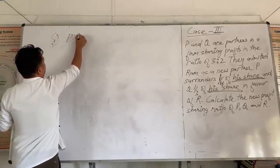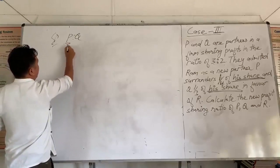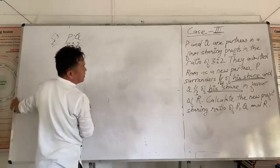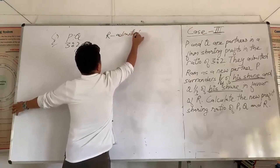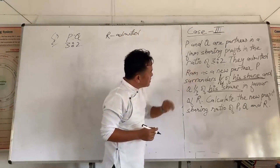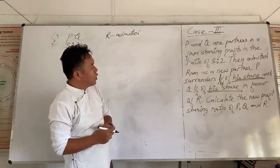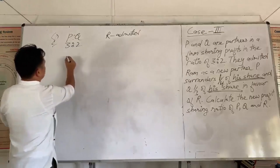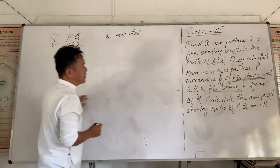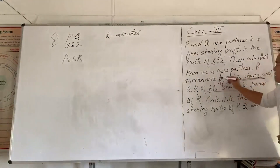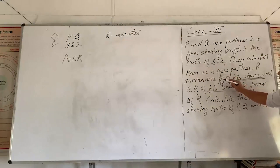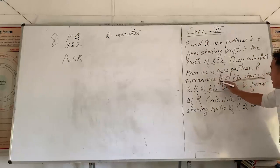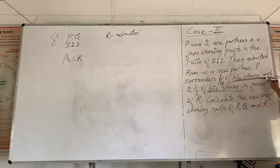So P and Q are partners sharing profit in the ratio of 3 to 2 and they admit R. The information is given with regard to the sacrifice made by old partners. Here P sacrifices one-third of his share. Note that one-third is not the sacrificing ratio directly — read the sentence carefully: P sacrifices one-third of his share. What is P's share? It is 3 by 5. So we have to multiply one-third by 3 by 5.